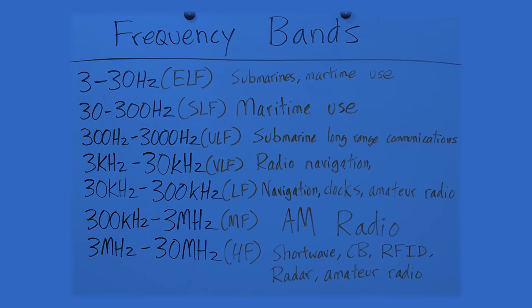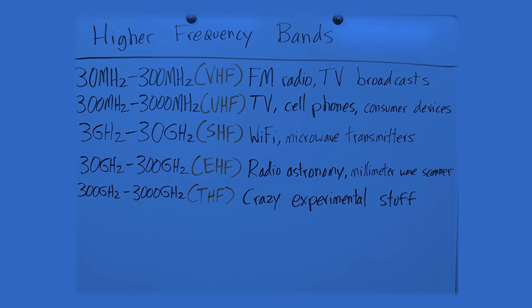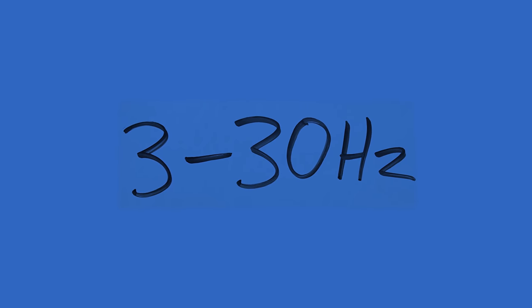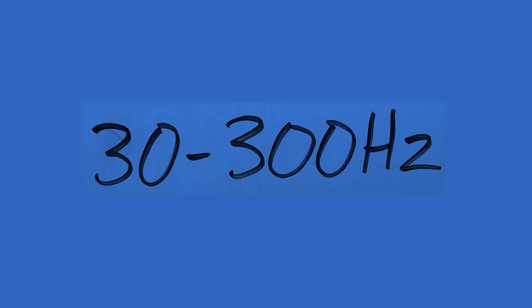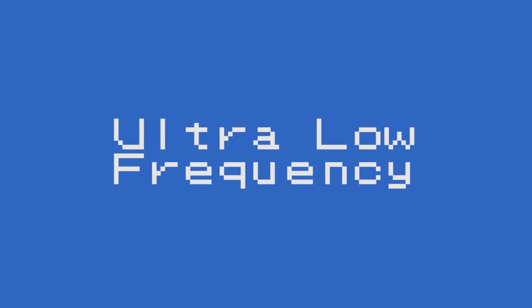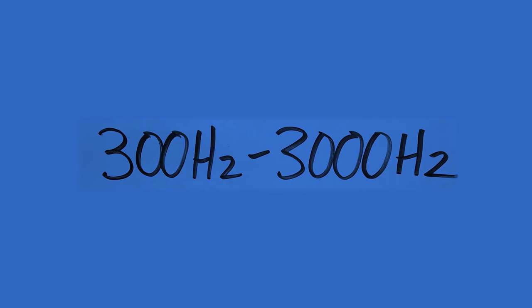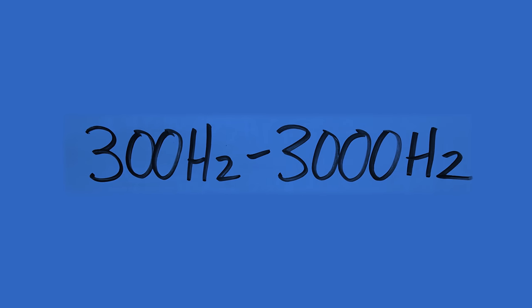Let's start by going over the radio frequency bands commonly used in America. We'll start with ELF, or the Extremely Low Frequency range. Lower frequencies like this are generally used for long-range communication, so we get a lot of submarine use and maritime use. Just above that is our 30 to 300 Hz range — Super Low Frequency, or SLF — which is still mostly maritime use. Above that, we have Ultra Low Frequency, the 300 Hz to 3000 Hz range, also used for long-range submarine communication.